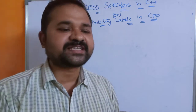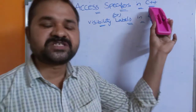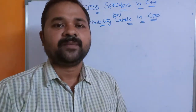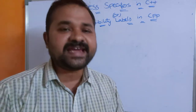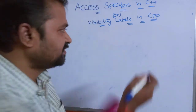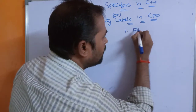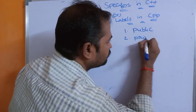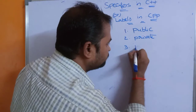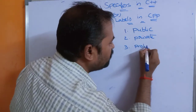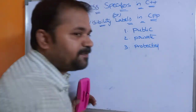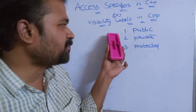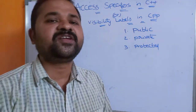In this video we are going to discuss access specifiers in C++, also called visibility labels. Mainly in C++ we have three access specifiers: public, private, and protected. Note that Java supports a default access specifier as well, but in C++ we don't have a default access specifier. So C++ supports only these three.